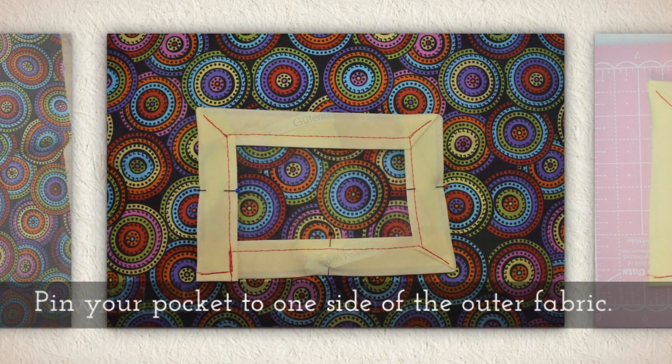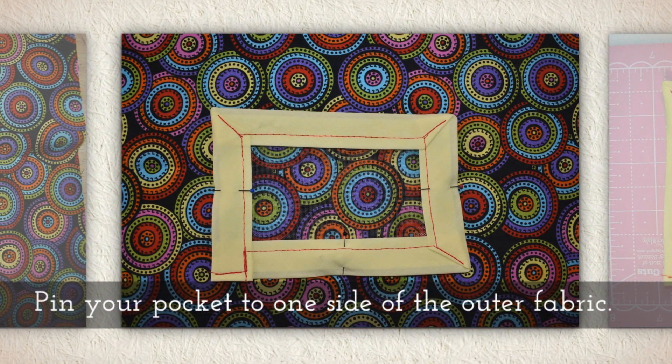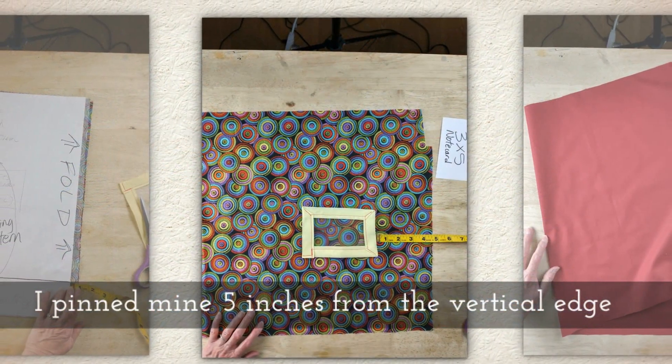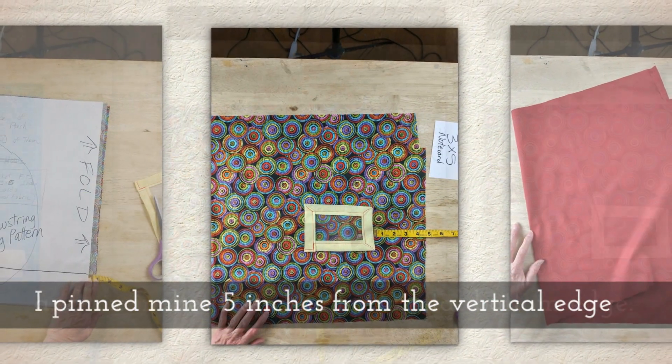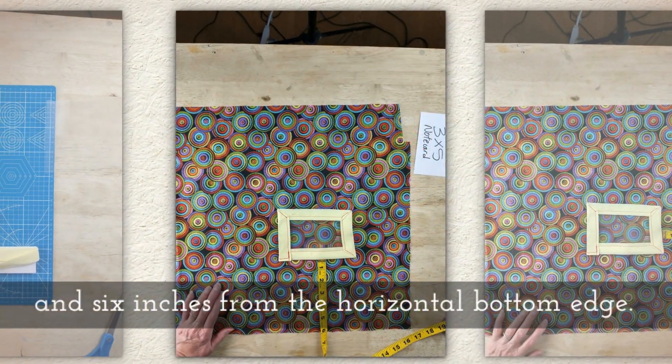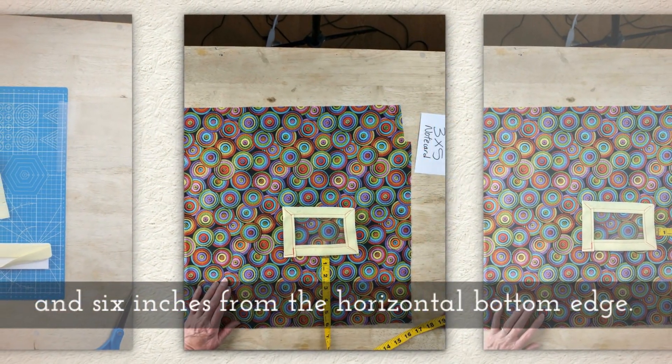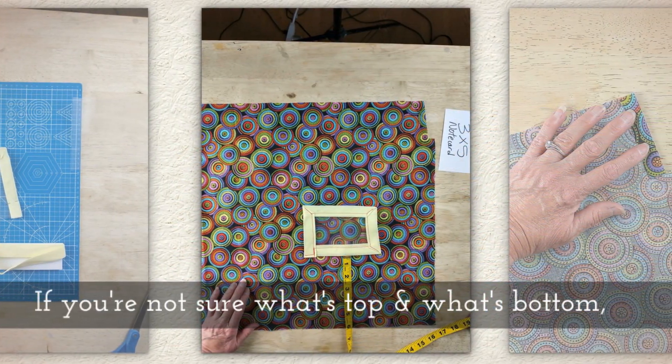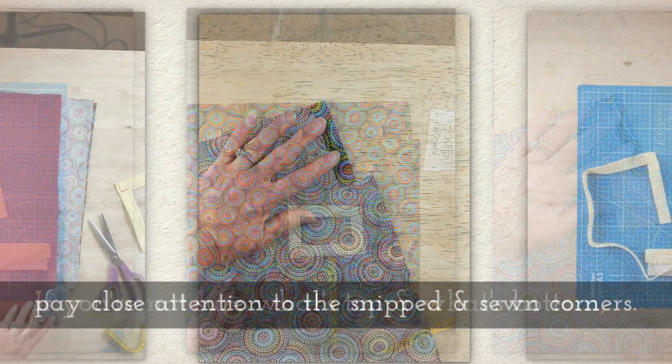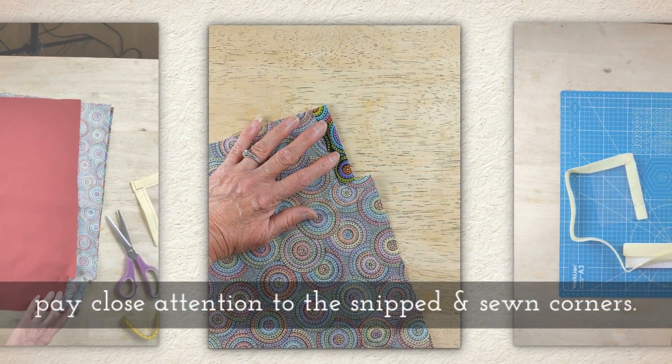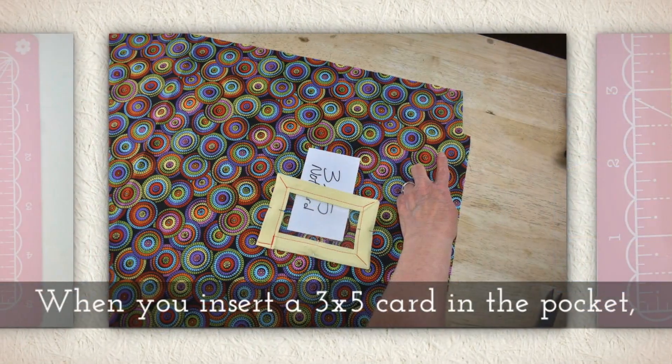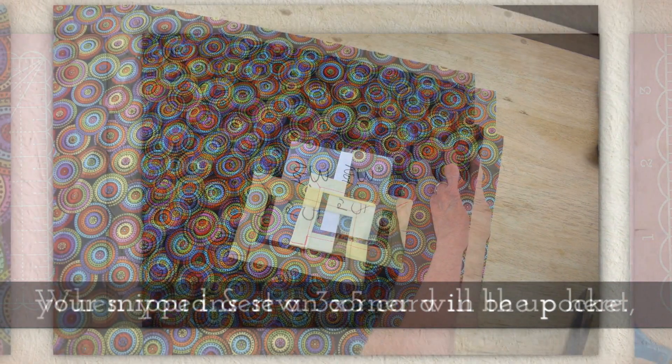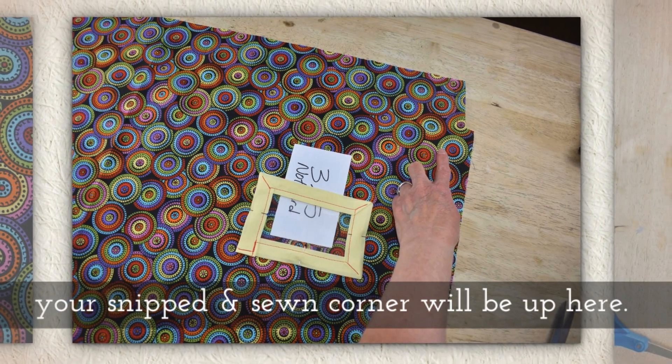Pin your pocket to one side of the outer fabric. I pinned mine about five inches from the vertical edge and six inches from the horizontal bottom edge. Now if you're not sure what's top and what's bottom, pay close attention to the snipped and sewn corners. Because that will be your casing.